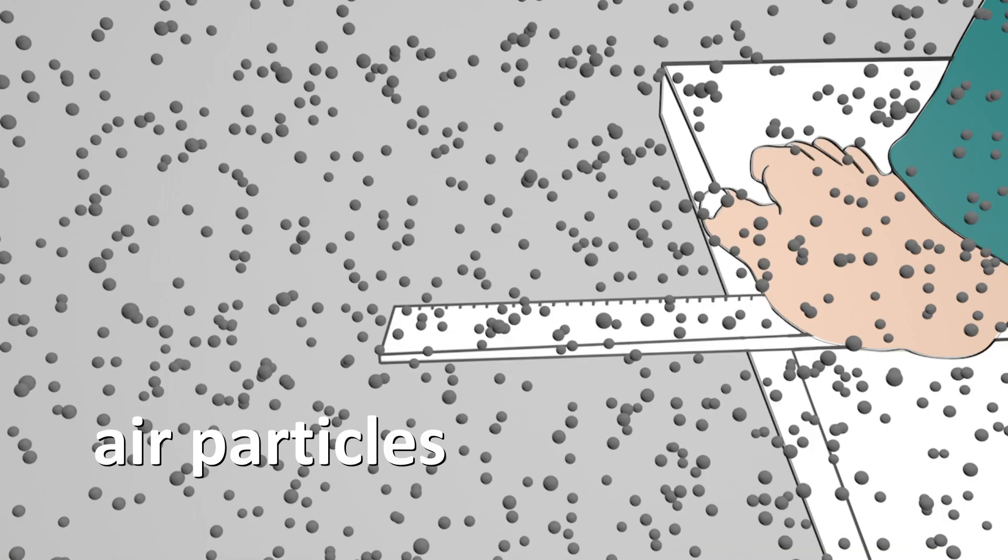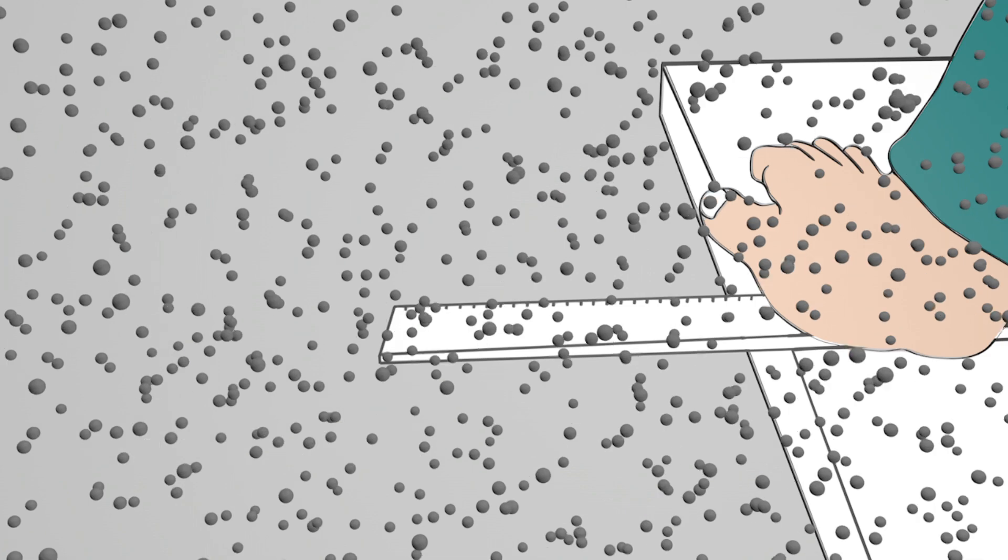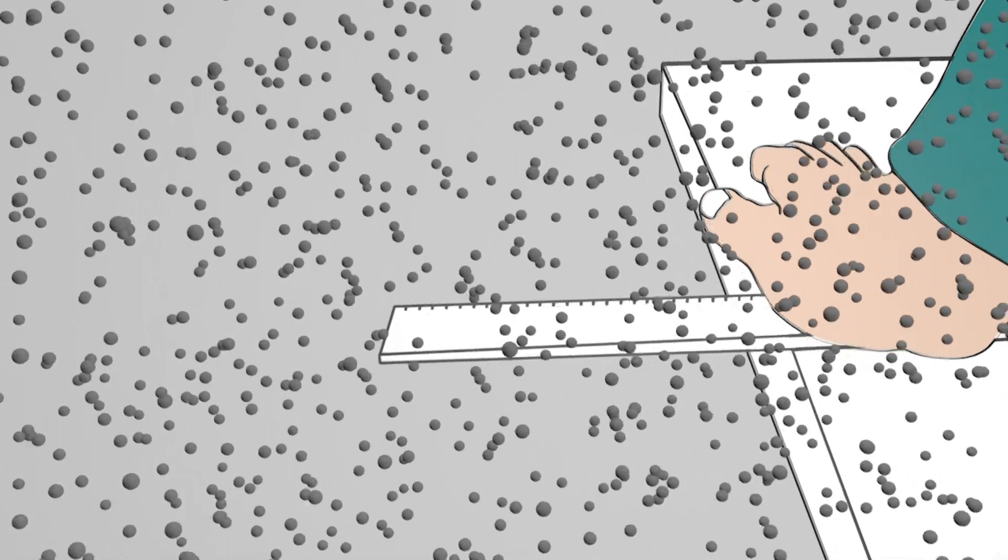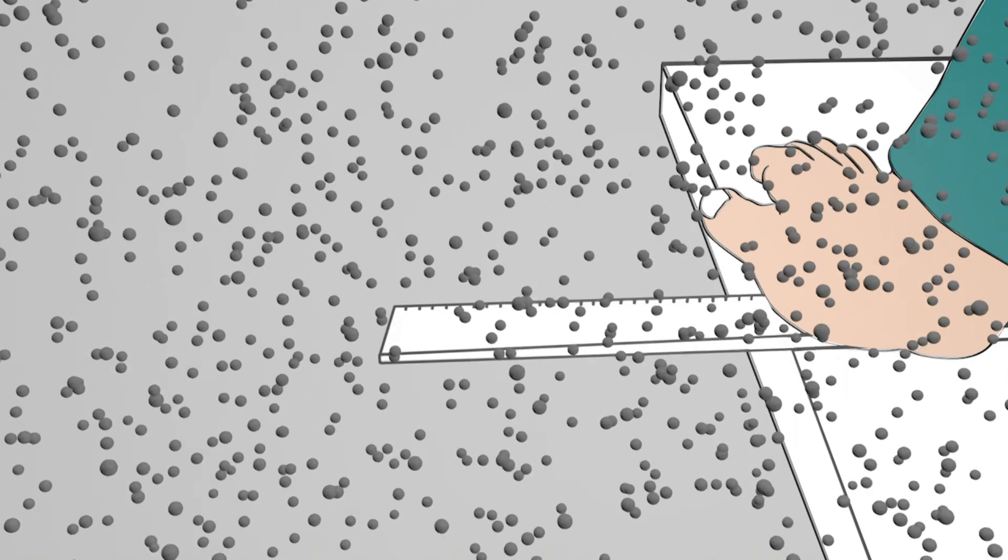The ruler is surrounded by lots of small invisible air particles. Nobody knows what these particles really look like. In order to be able to imagine these, they are shown in the animation using small gray spheres. The air particles are never at rest and constantly collide with one another.